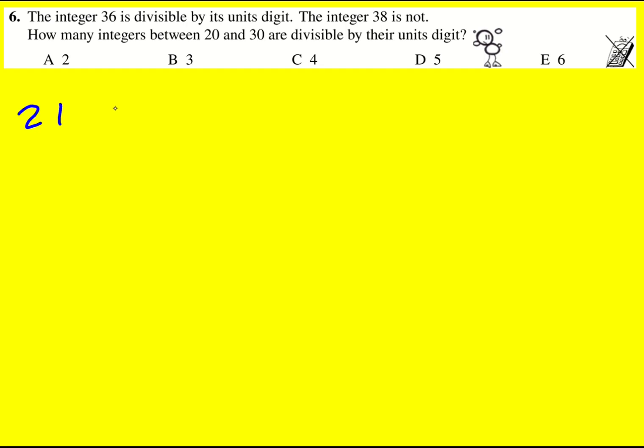For this question, let's just write down all the whole numbers between 20 and 30, and then figure out if they are divisible by their units digits.